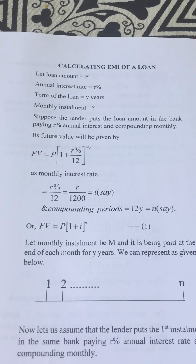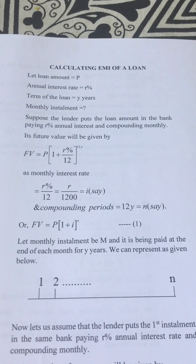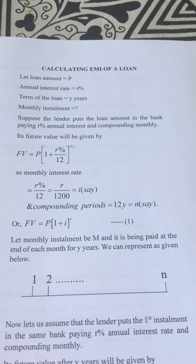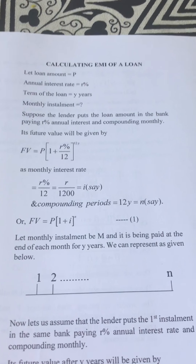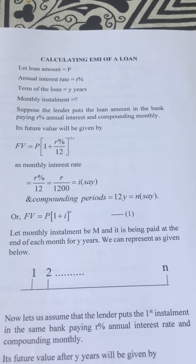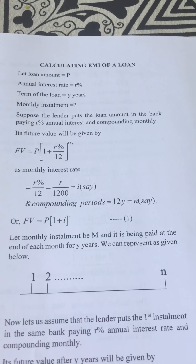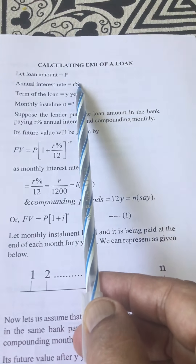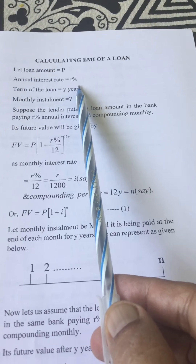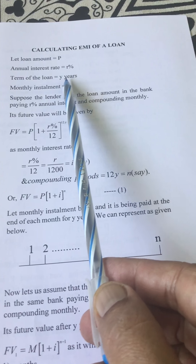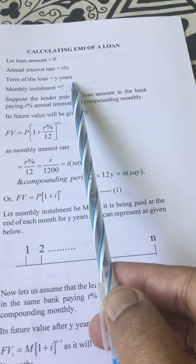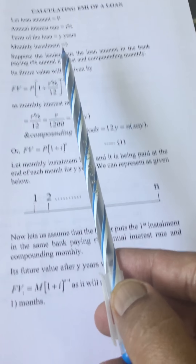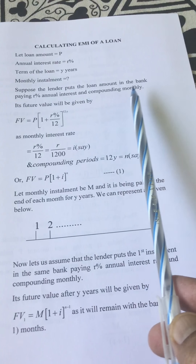One of the quite common problems is calculating the EMI of a loan. We will see in this video how we can calculate the EMI — that is, the Equally Monthly Installment — of a loan. Let the loan amount be P, the annual interest rate be R percent, and the term of the loan be Y years. The monthly installment is to be calculated.